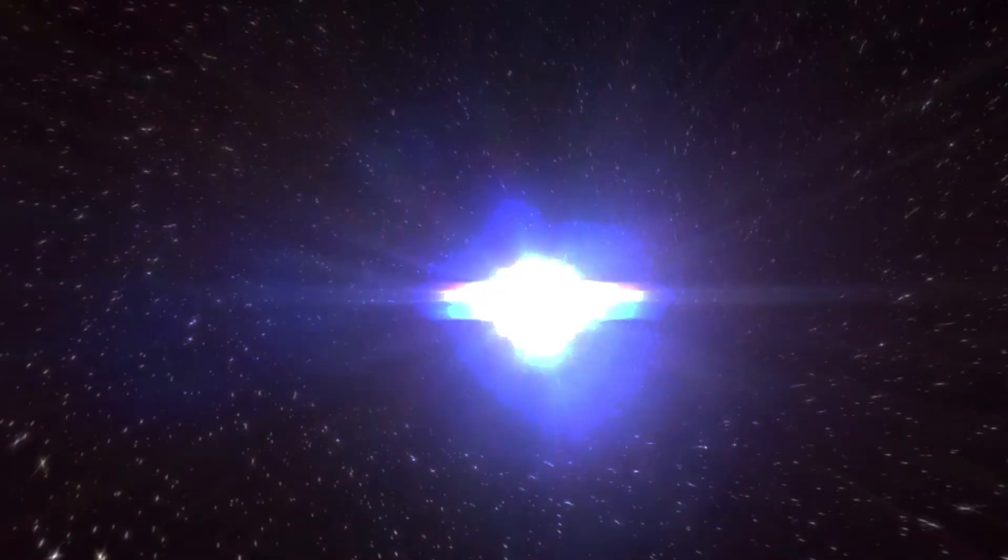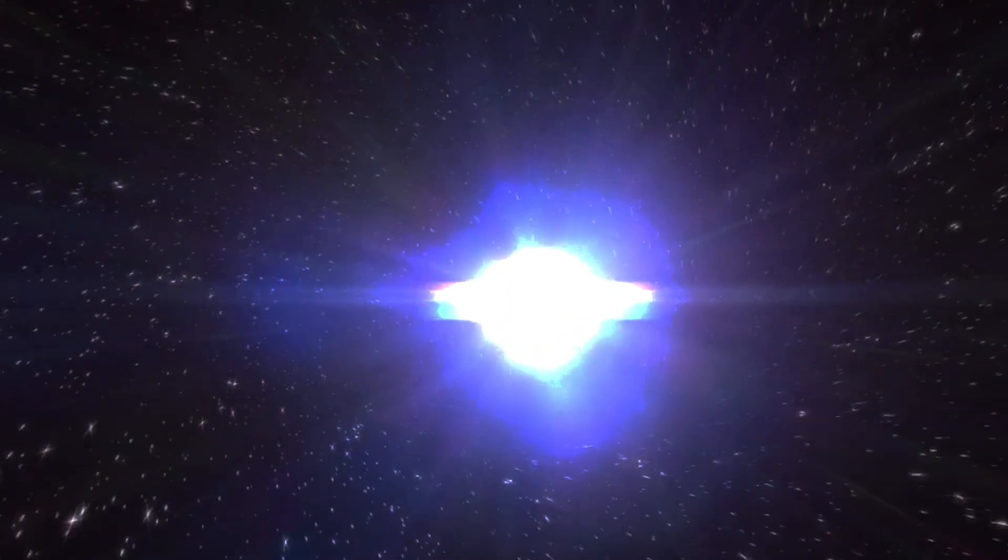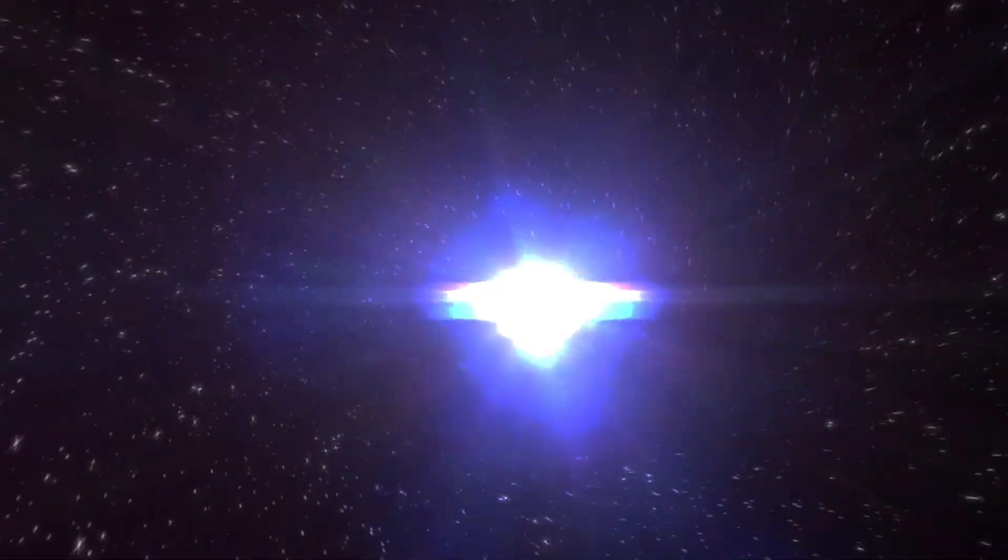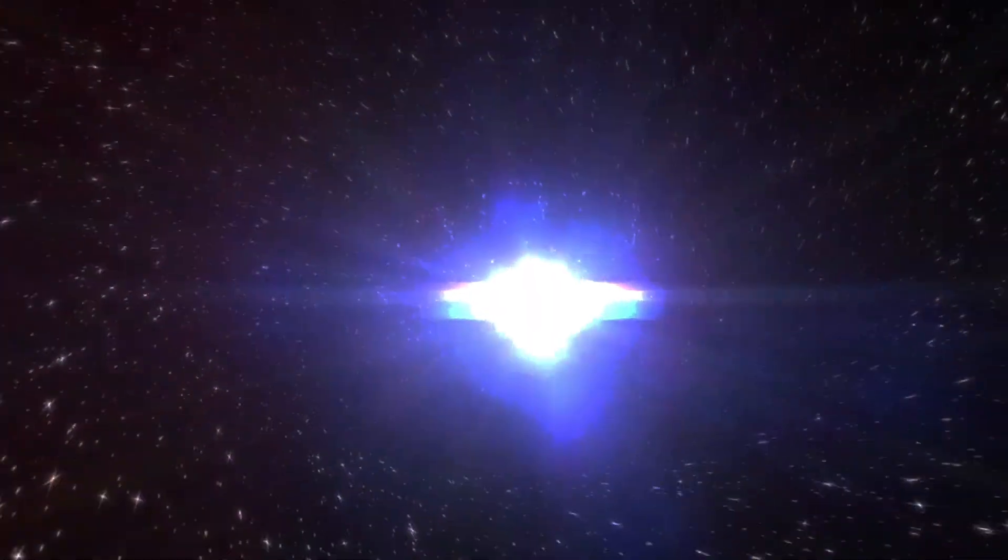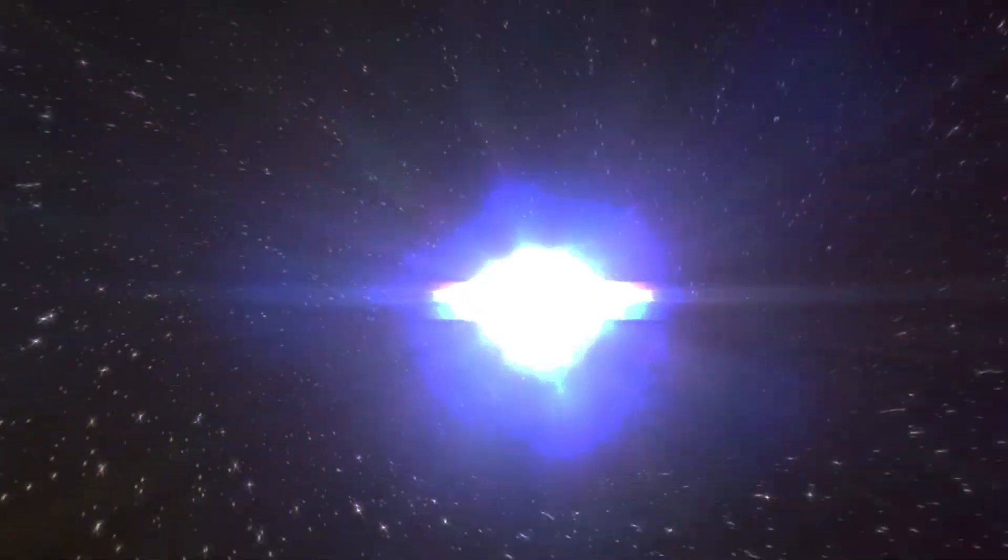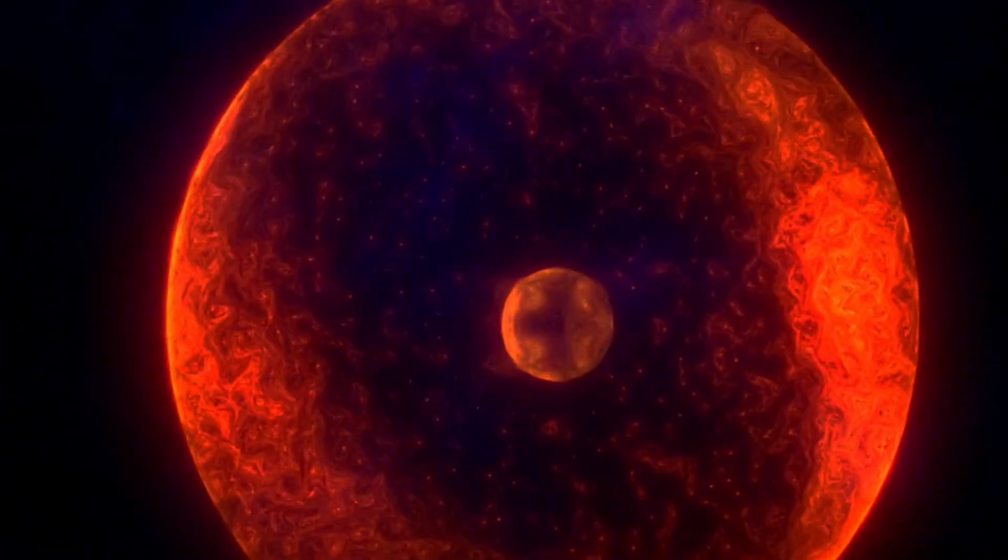Given a fixed volume, a black hole whose event horizon encompasses that volume should be the object with the highest amount of entropy. Otherwise, suppose we have something with a larger entropy, then by throwing more mass into that something, we obtain a black hole with less entropy, violating the second law.